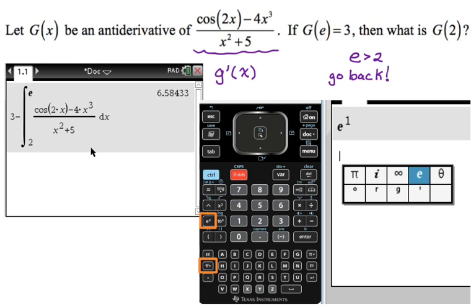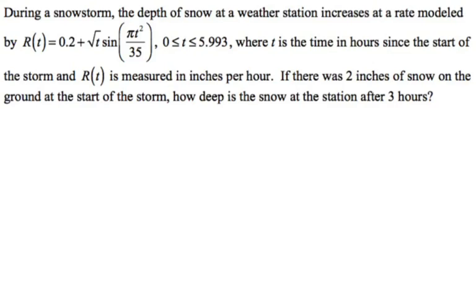All right, let's take a look at another example. This one's pretty straightforward. So we have during a snowstorm, the depth of snow at a weather station increases at a rate modeled by R of t, which is that thing. And we're specifying that t is between zero and 5.993, where t is the time in hours since the start of the storm, and R of t is measured in inches per hour. So we want to find if there were two inches of snow on the ground at the start of the storm, how deep is the snow at the station after three hours.